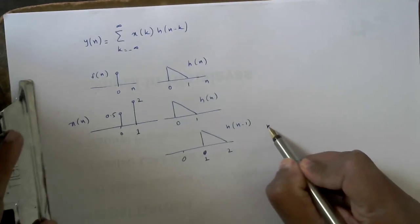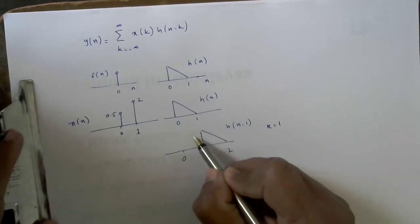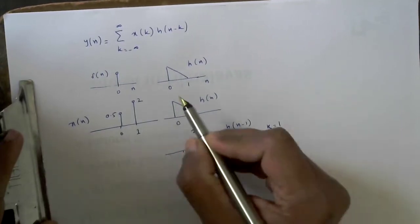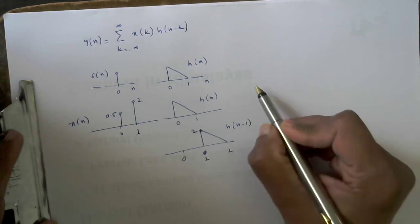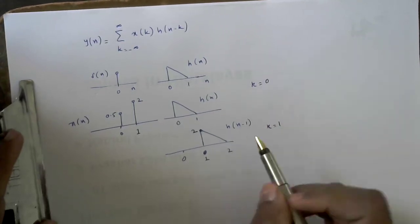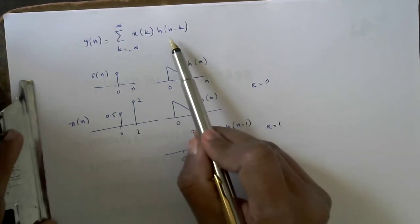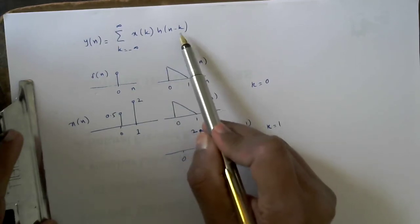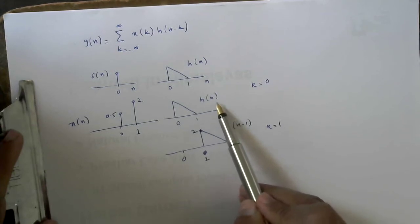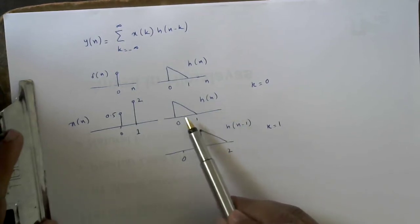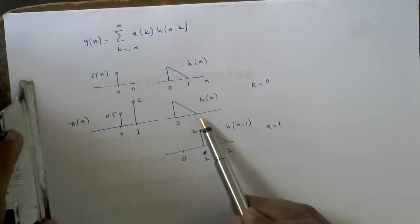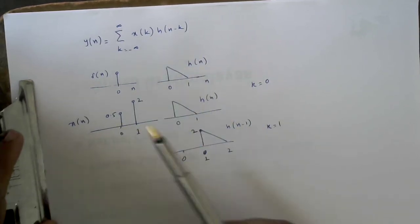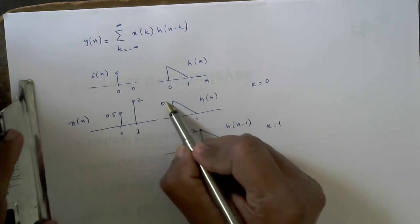So this is when k is equal to 1, and this scaled function is actually going to be 2. When k is equal to 0, it is x(k) into h(n minus k), which is x(0) times h(n). That is why you have h(n) itself, and it has to be scaled by x(0). Since h(0) is 0.5, this has to be scaled by 0.5.